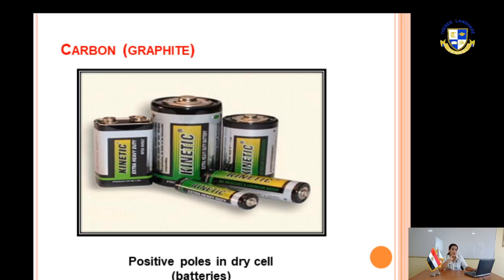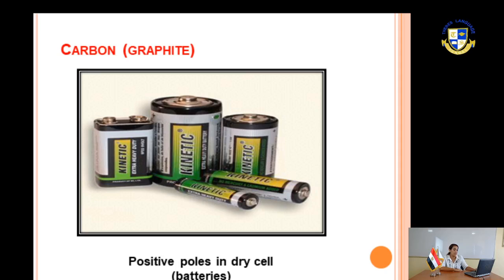Carbon is a non-metal, but we said before that it is a good conductor of electricity — this is the exception. So we use it in making the positive pole of a dry cell.